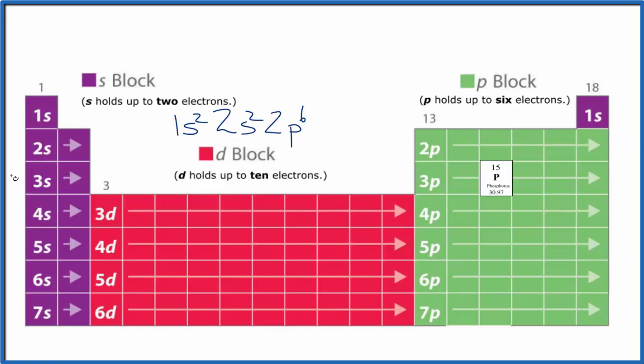So 2p, we go to 3s1, 3s2, and then we're over to 3p, and we go 1, 2, 3, 3p3. And if you count these numbers up, we've used 15 electrons. So this is the electron configuration for phosphorus.